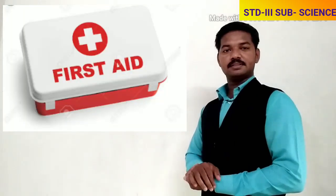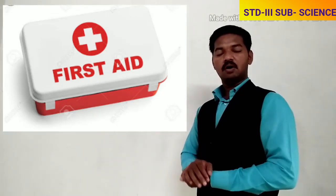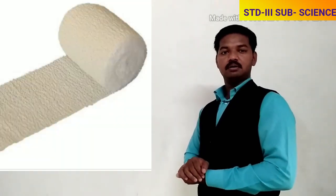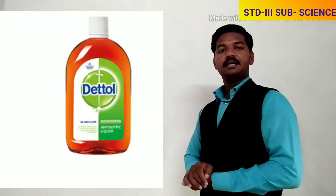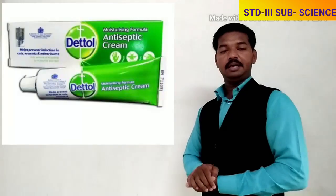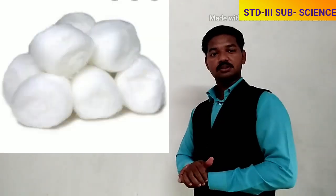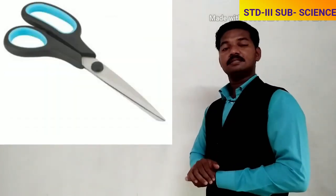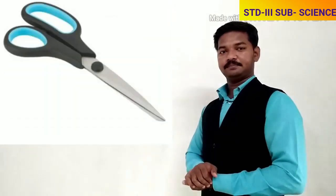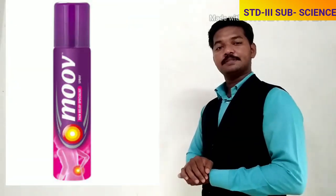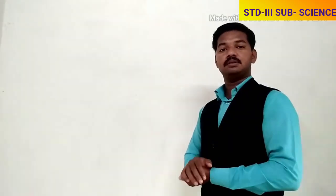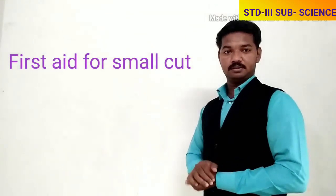The first aid box at our home or in school should have: bandage, crepe bandage, antiseptic lotion which kills germs, antiseptic cream, cotton, and a pair of scissors. It must also have a pain relieving spray.